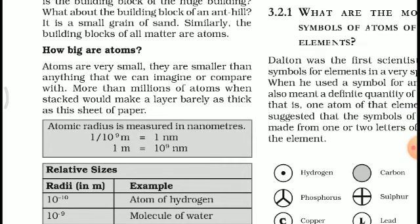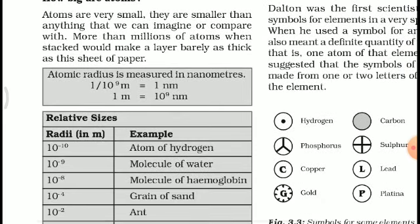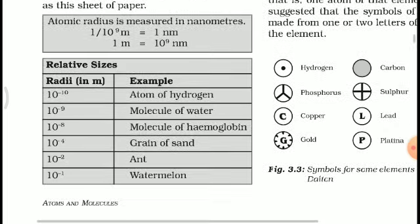To get an idea of the size of atoms: atoms are very small — smaller than anything we can imagine or compare with. More than one million atoms when stacked would make a layer barely as thick as a sheet of paper. Atomic radius is measured in nanometers; 1 meter equals 10⁹ nanometers. You will wonder how incredibly small the size of an atom is.